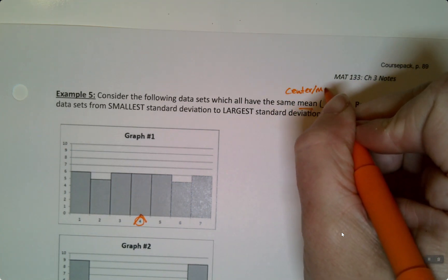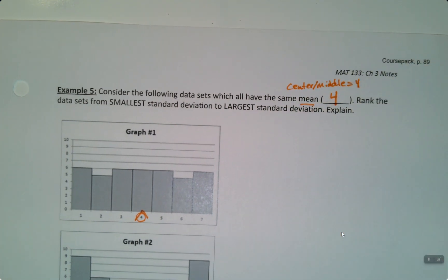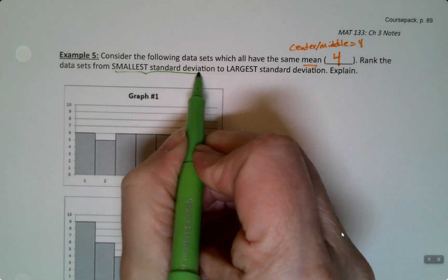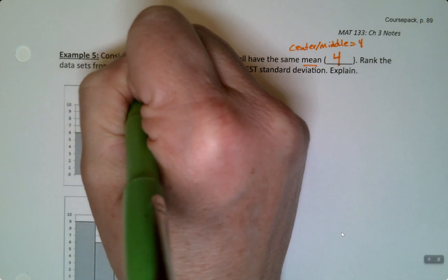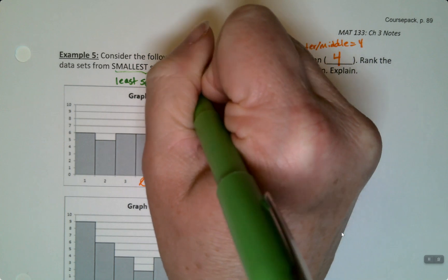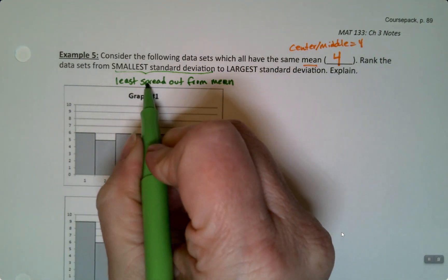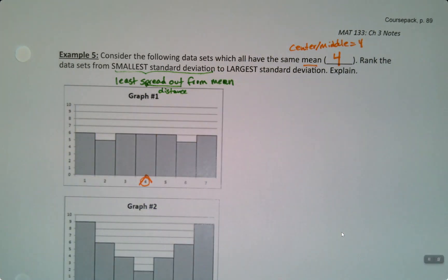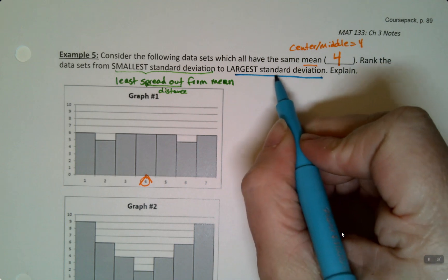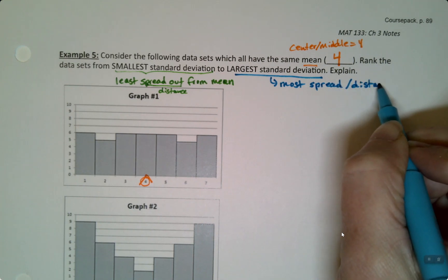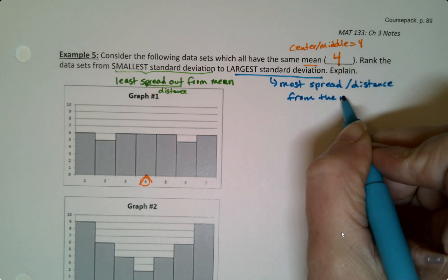But now what we're going to do is rank the data sets from the smallest standard deviation to the largest standard deviation. And what you have to think about is you have to think about spread from that center, distance from that center. Smallest standard deviation will have the least spread out or the least distance from the mean. That's what standard deviation measures is distance from that mean. The largest standard deviation by contrast will have the most spread or distance from the mean.